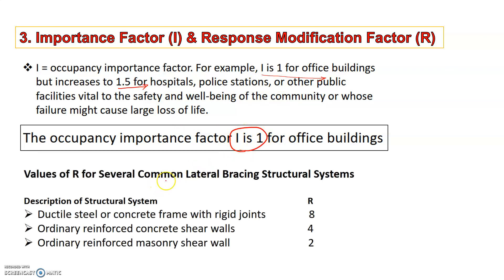The value of R or the response modification factor is listed here and in our case the value of R is 8 which corresponds to ductile steel or concrete frame with rigid joints.